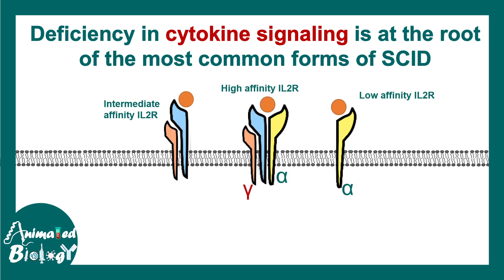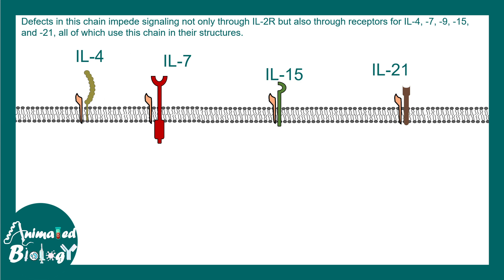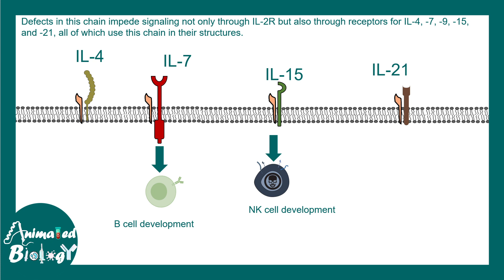The IL-2 receptor gamma subunit is associated with many important functions and maturation of different immune cells. If the gene encoding the common gamma chain for the IL-2 receptor is mutated, it leads to many problems — one being a maturation defect of T-cells. This is associated with the X chromosome and is an X-linked condition. This co-receptor is also shared with many other interleukin receptors, such as interleukin-7, which is crucial for B-cell development. So mutation in the IL-2 gamma chain can also compromise B-cell development. Interleukin-15 signaling can also be abrogated, leading to a problem in NK-cell development. One mutation can thus lead to a plethora of symptoms.